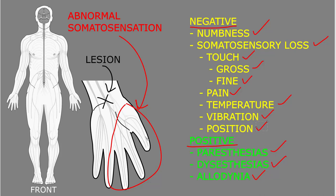For example, I might hold the patient's thumb, have them close their eyes and relax, then lift the thumb up or down and ask which direction I moved it, to test whether they have position sense without looking at the affected body part. That is a quick run-through of the terms used for abnormal somatosensation, and we will get into many examples when we look at specific lesions and syndromes later on.